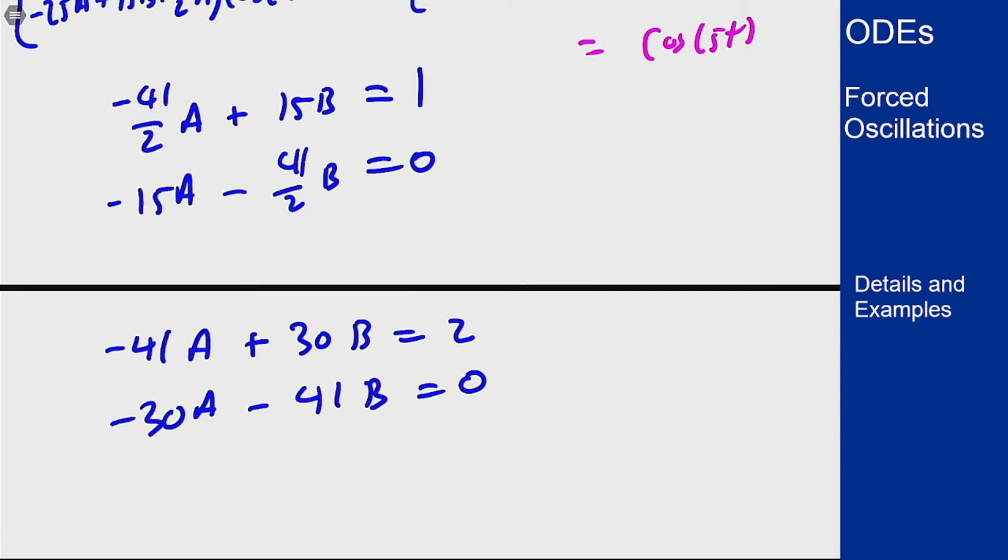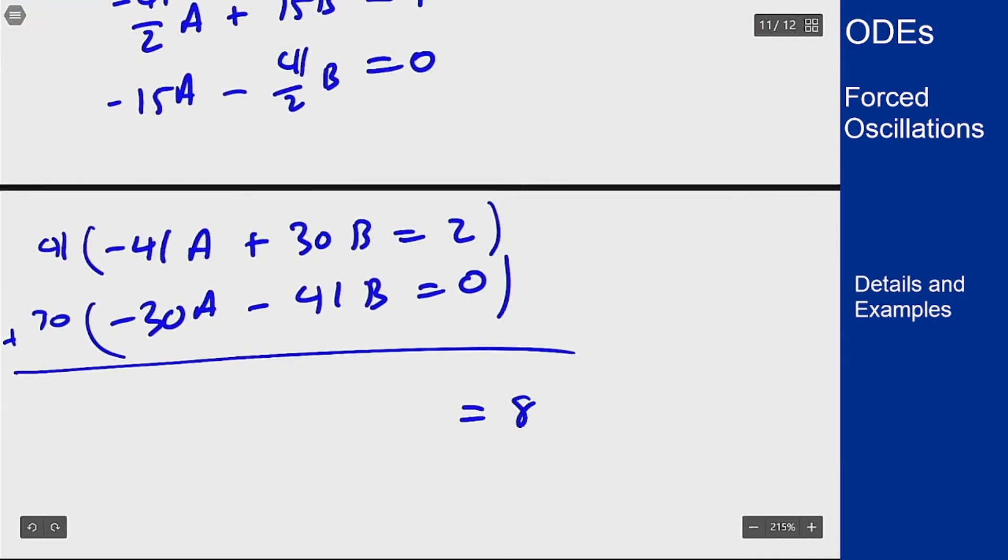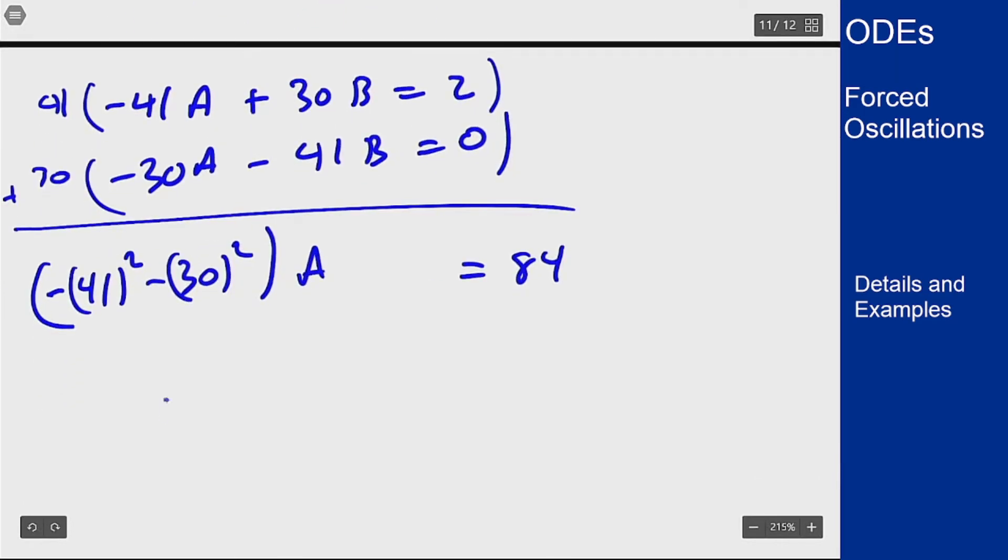I'm going to cancel this out by multiplying the first equation by 41, the second by 30, and then add them to get rid of the B terms. I'll end up with 84 on the right, and on the left I'll end up with negative 41 squared minus 30 squared times A. My value of A here will be 84 over negative 41 squared plus 30 squared, or 84 over 2581.